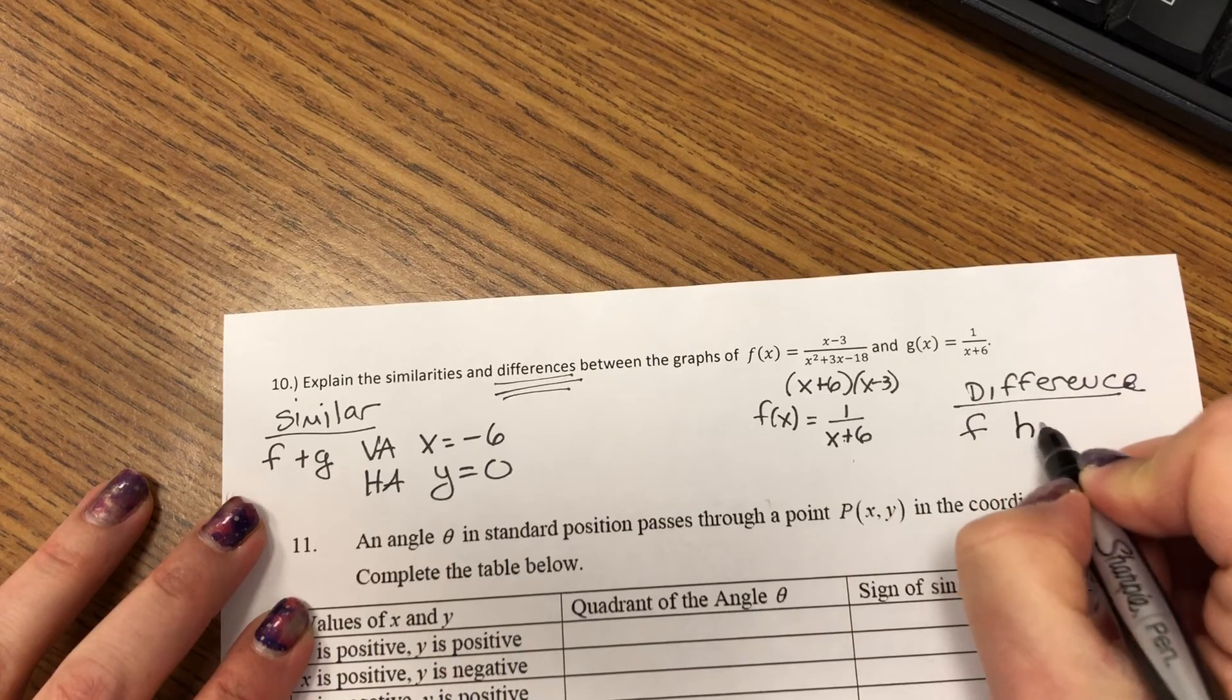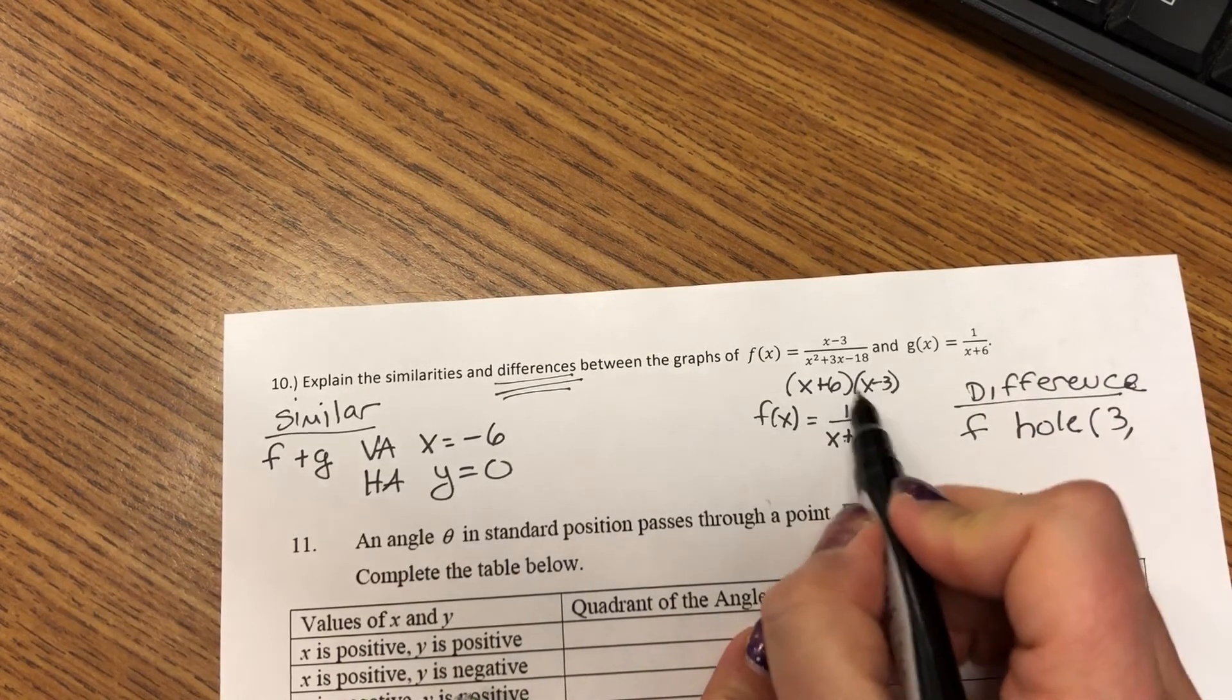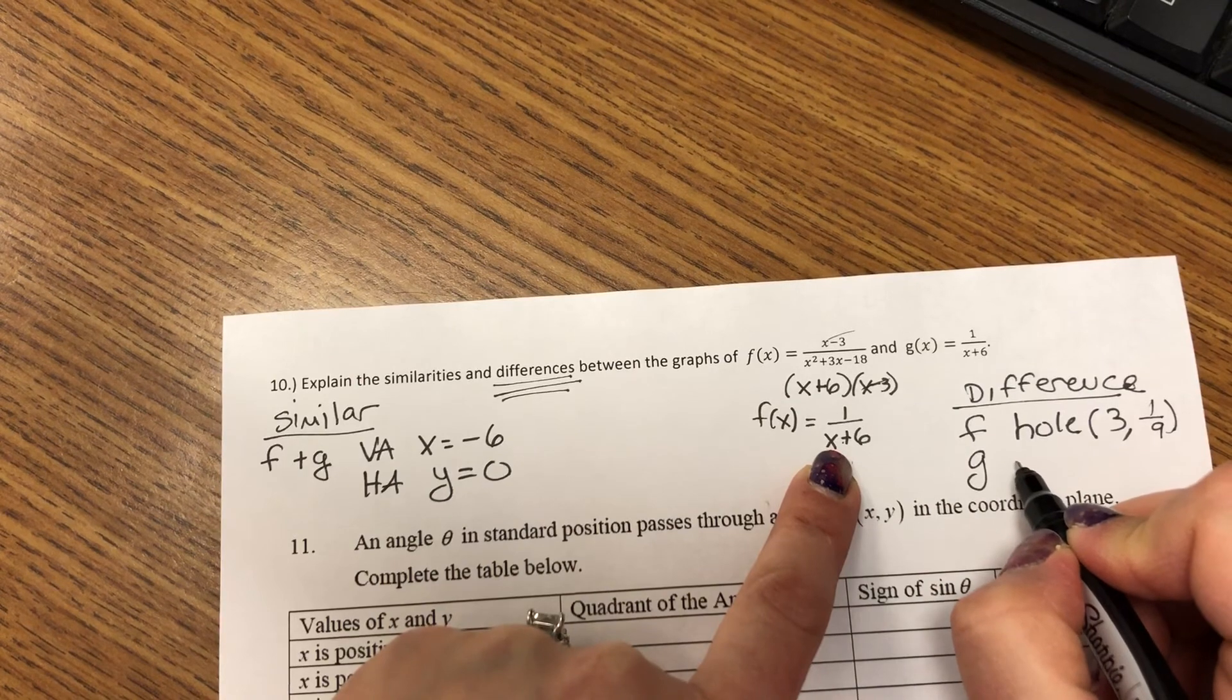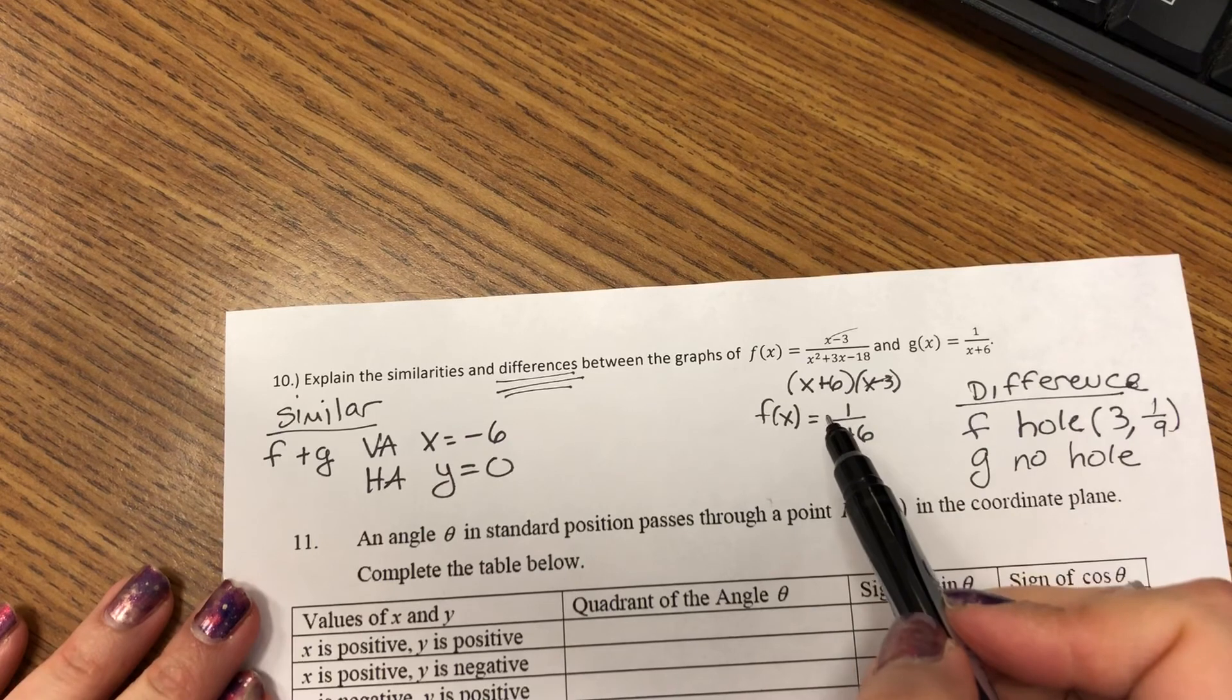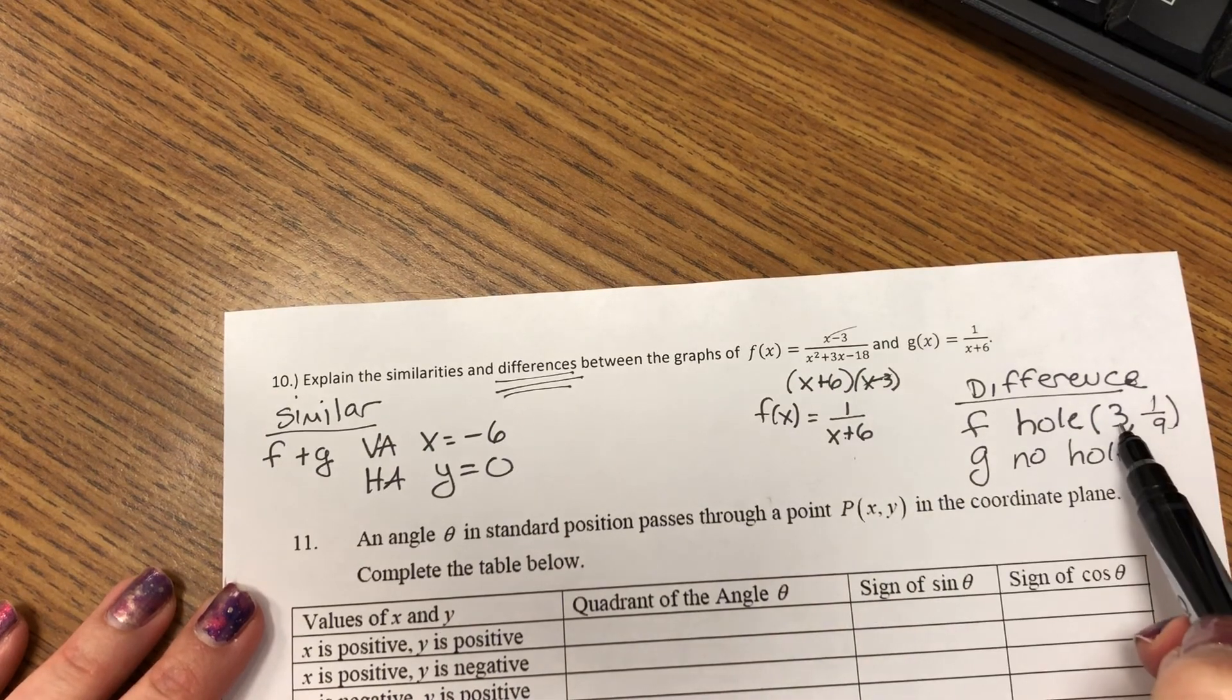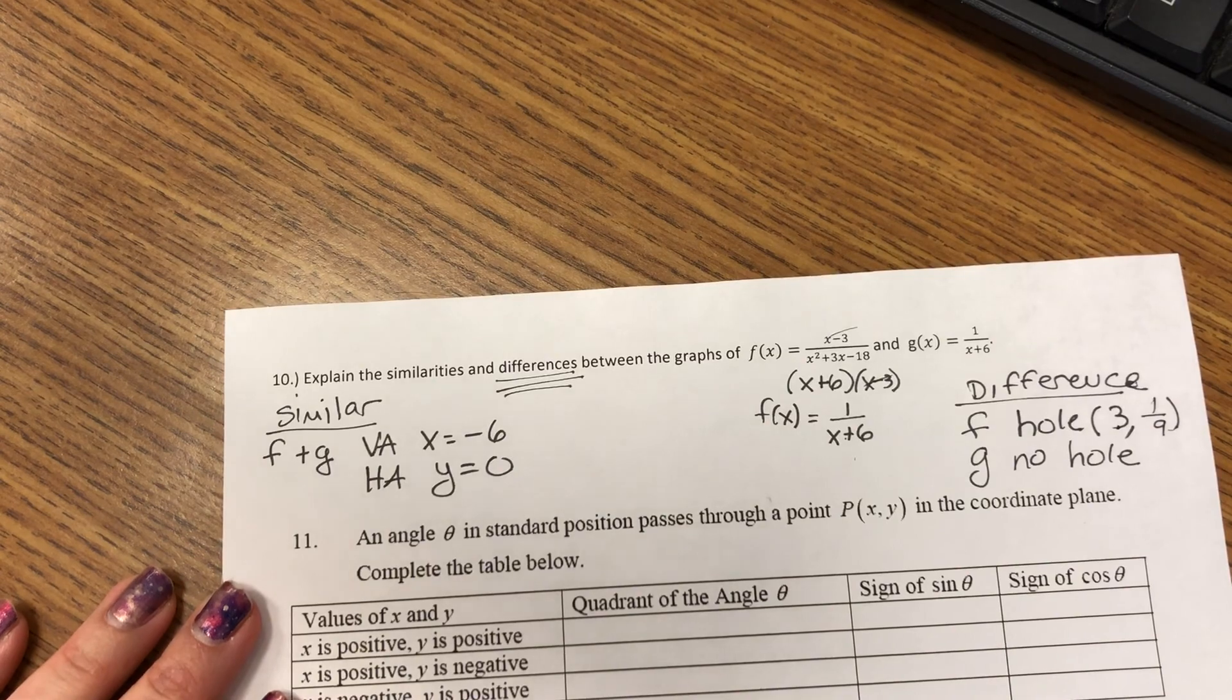The difference is, f has a hole at 3 because that is the factor that divided and then substituting that in 1 ninth, where g has no hole. The reason that f has a hole is this factor that divides to 1 creates this discontinuity at 3. So then you also have to find the y value.